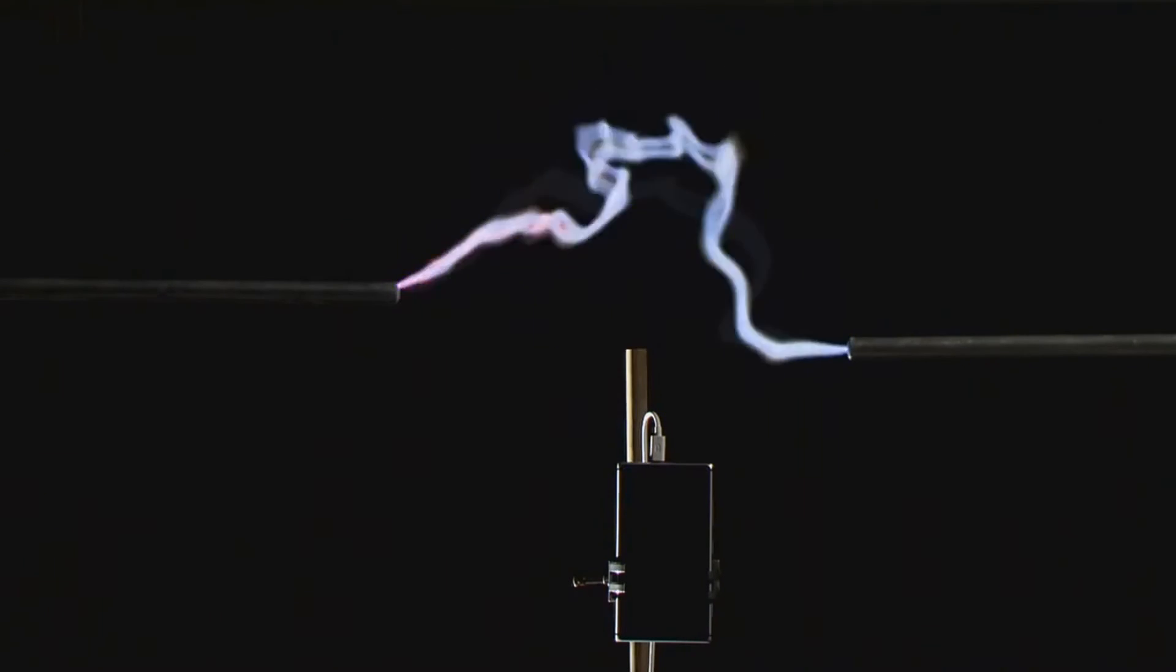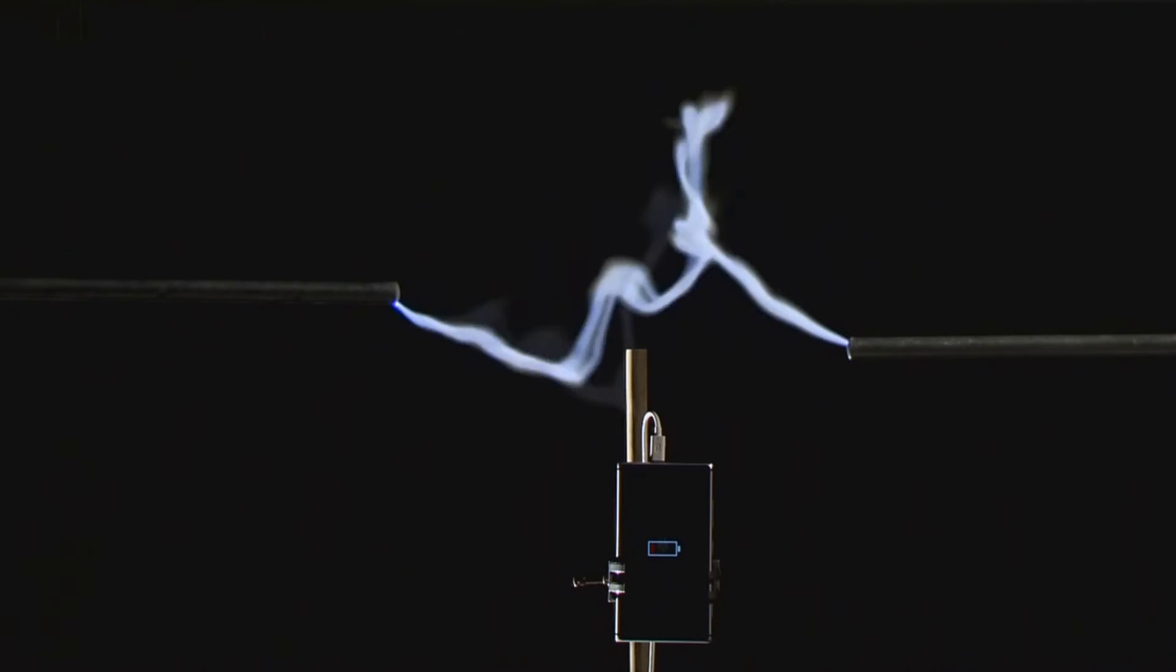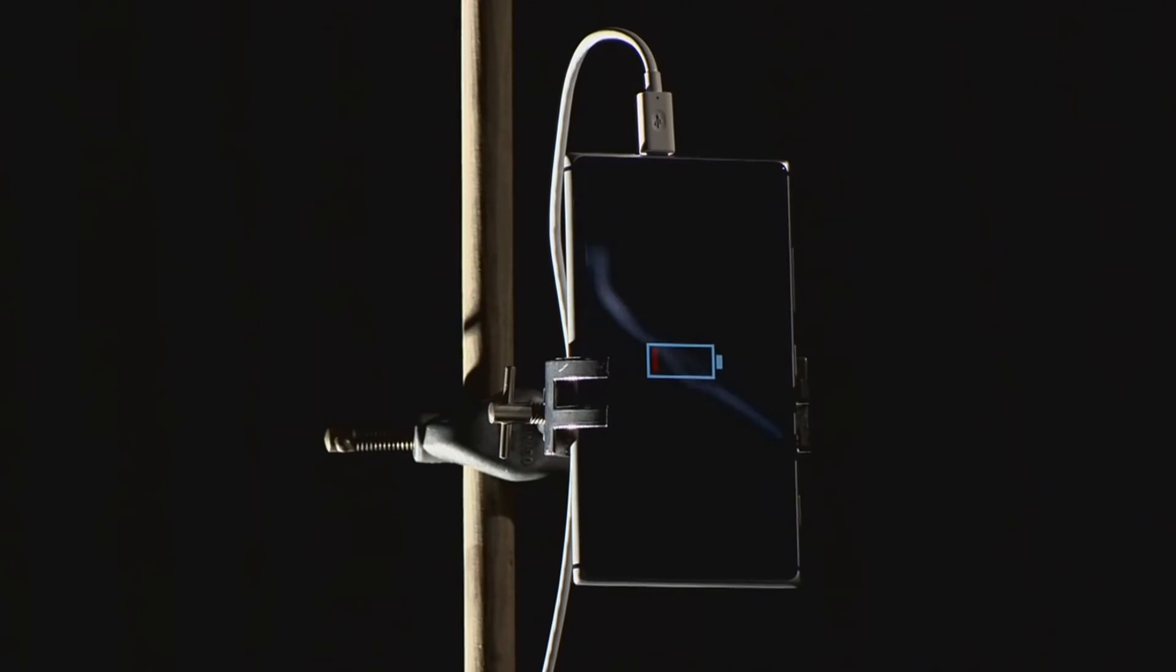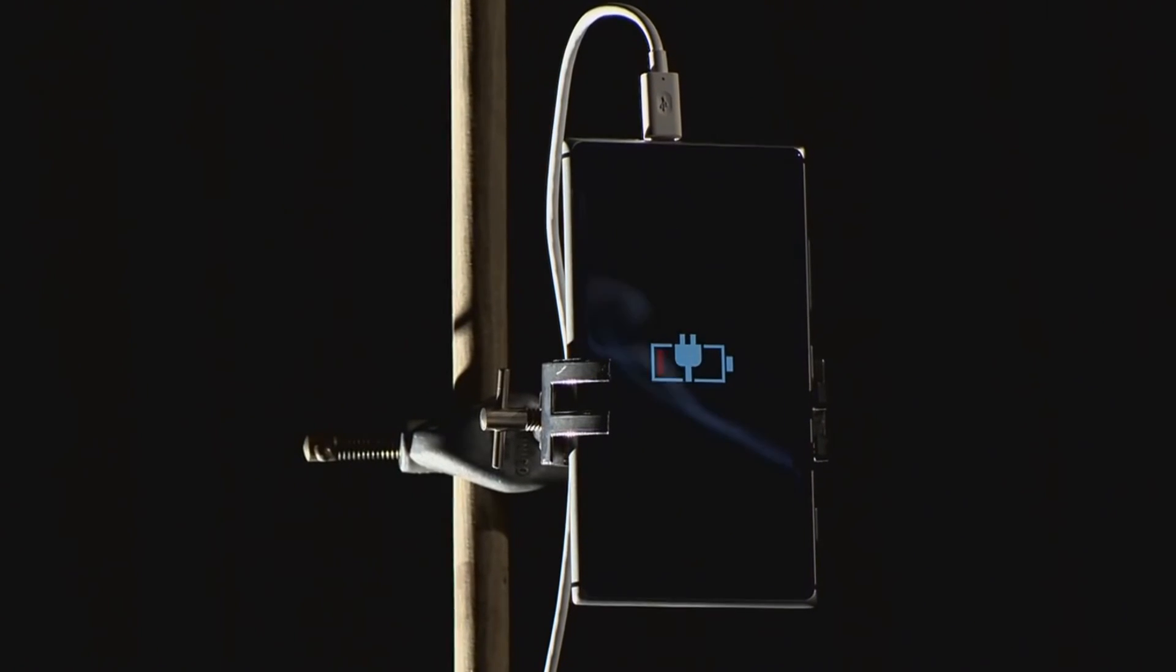We're able to take this massive erratic voltage and the phone is able to smooth that charge out. This is a first step into understanding the power of natural lightning and being able to harness its energy.